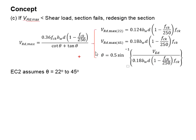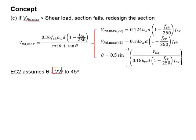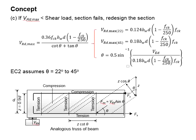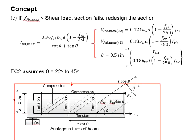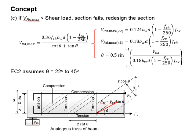Having VRD Max established, you can assume the angle, which is the gradient of the diagonal strut, ranging from 22 degrees to 45 degrees. When a beam member is subjected to a low degree of load, the gradient of the diagonal strut will be milder — the angle is relatively small. As the shear load increases, this angle increases up to a limit of 45 degrees, at which point the member fails.